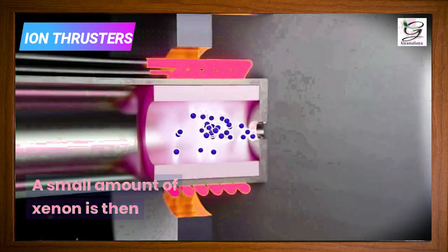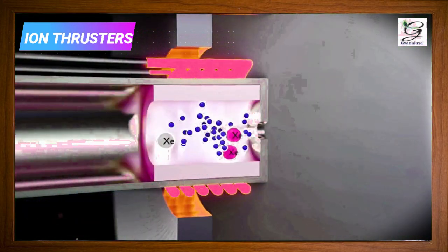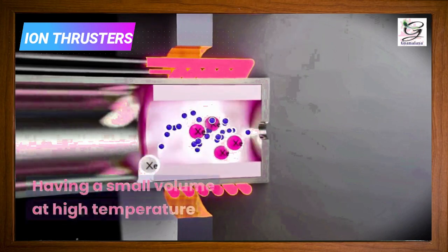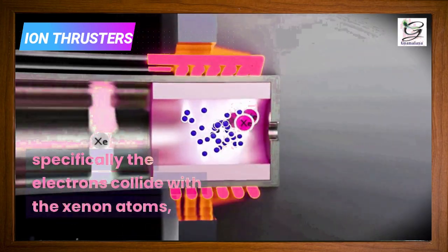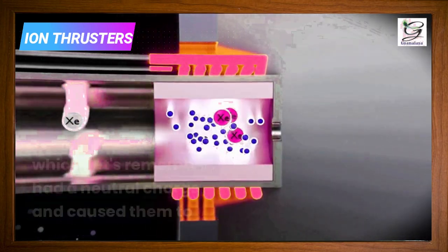A small amount of xenon is then injected into the tube from the rear. Having a small volume at high temperature, the electrons collide with the xenon atoms, which, let's remember, had a neutral charge.